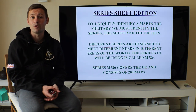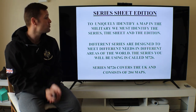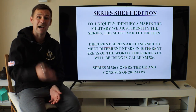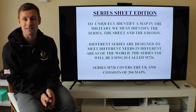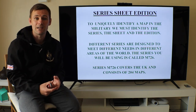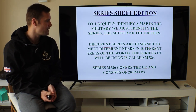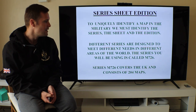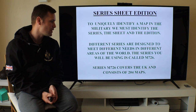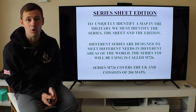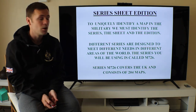Series, Sheet, and Edition — we call this the SSE box. This uniquely identifies a map. In the military, we must identify the series, the sheet, and the edition. In civilian use as well, you want to make sure you've got the right SSE for the area you're going out in. Different series are designed to meet different needs. The series you'll be using is called the M726, which covers the whole UK and consists of 204 maps.